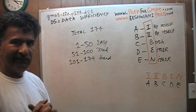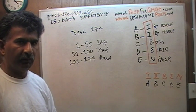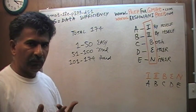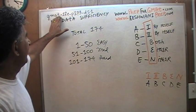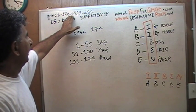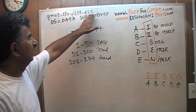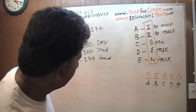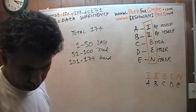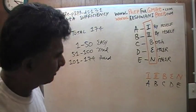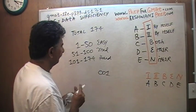Look out for the next video. Once I start uploading them on YouTube, if you are looking for a specific data sufficiency problem from the 12th edition book, put down GMAT-12E, then a dash and the page number where the problem is located, then dash data sufficiency, then the question number. If it is problem number 13, put down 13. If it is problem number 131, put down 131. If you are looking for problem number 1, don't type in 001 — just put 1.